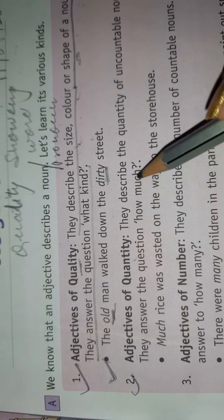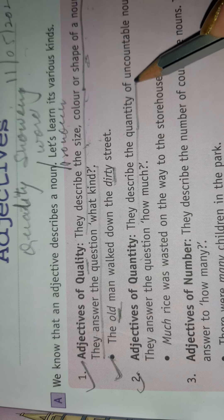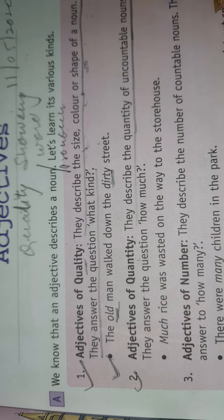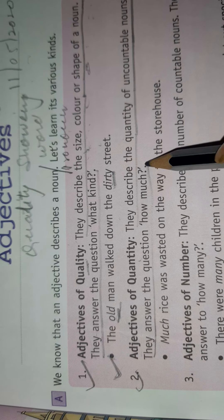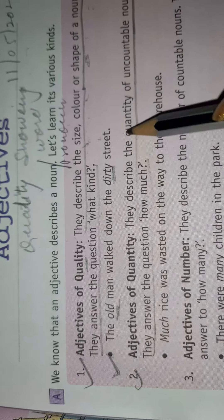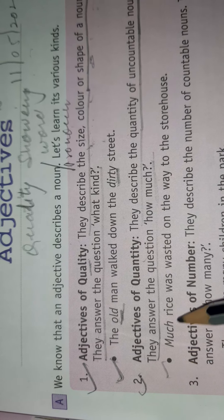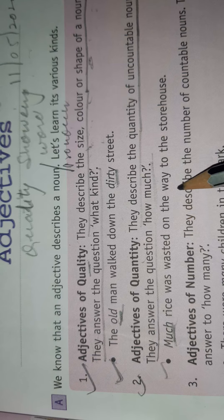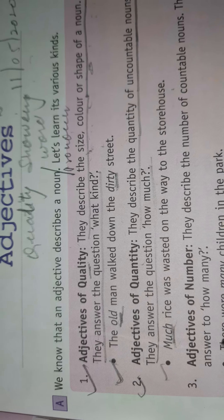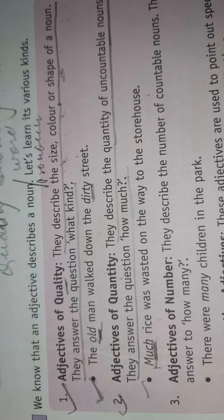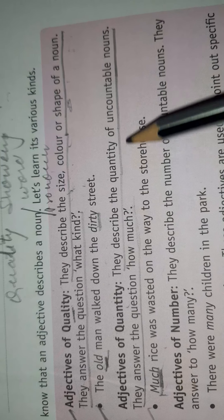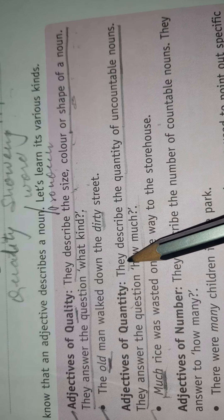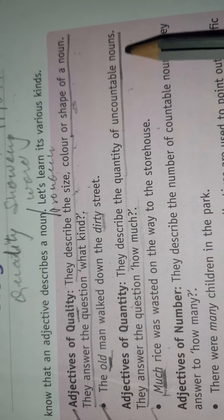Number two: Adjectives of Quantity. They describe the quantity of uncountable nouns. They answer the question 'how much.' For example: 'Much rice was wasted on the way to the storehouse.' In this sentence, 'much' is an Adjective of Quantity. We use it to quantify or describe an uncountable noun.